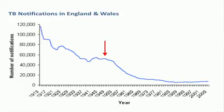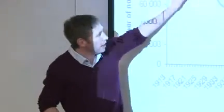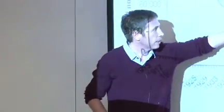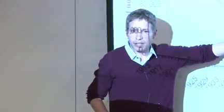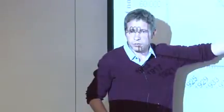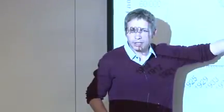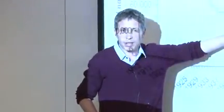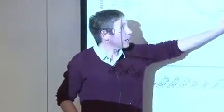Just to reinforce Dave's point: we started notifying TB in the UK in 1913, and here you see the decline of TB. The streptomycin trial was in 1948, the National Health Service was founded in 1948, and most of TB was gone, as Dave said.